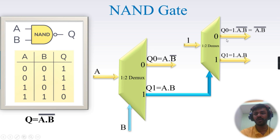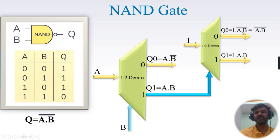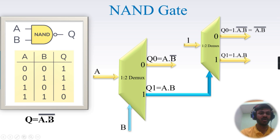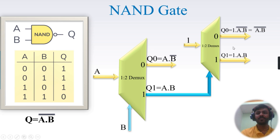In the second demux, based on select line A AND B, the outputs are Q0 and Q1. At Q0 we get (A AND B) AND 1, and as per the identity law A AND 1 always equals A — so here instead of A we get (A AND B)-bar. As per the truth table and logical expression of NAND gate, we get the output (A AND B)-bar from Q0. We don't need to worry about Q1 here. This combination of two 1-to-2 demuxes implements the NAND gate.